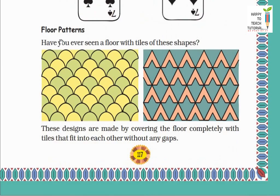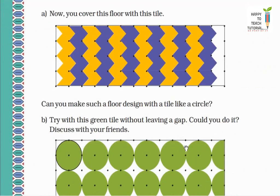Now look at next: Floor patterns. Have you ever seen a floor with tiles of these shapes? You must have seen this type of shape tiles on the floor. So almost everyone must have seen them. Look, with this type of tile pattern. These designs are made by covering the floor completely with tiles that fit into each other without any gaps. Without leaving any gap, these tiles are fitted together in such a way that they completely cover the entire floor with this design.